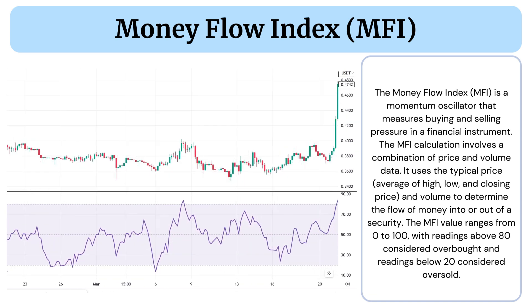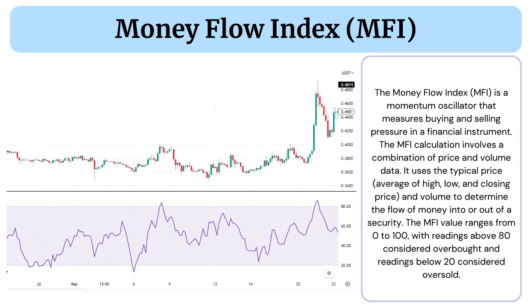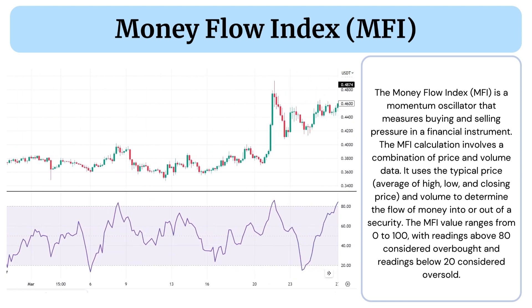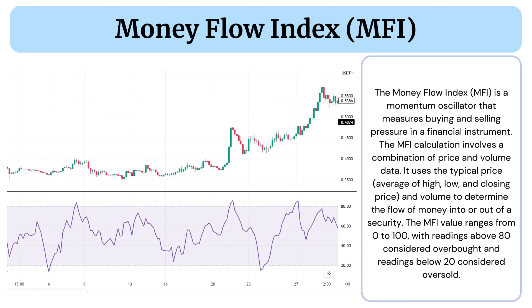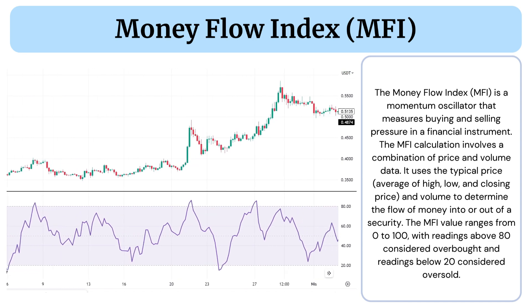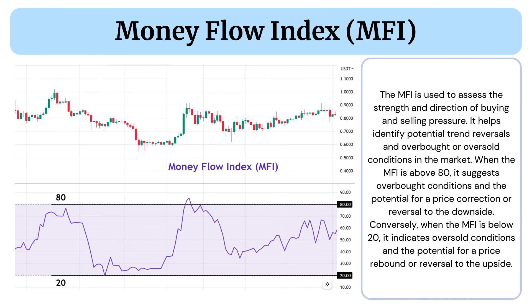The MFI value ranges from 0 to 100, with readings above 80 considered overbought and readings below 20 considered oversold. The MFI is used to assess the strength and direction of buying and selling pressure, and it helps identify potential trend reversals and overbought or oversold conditions in the market.